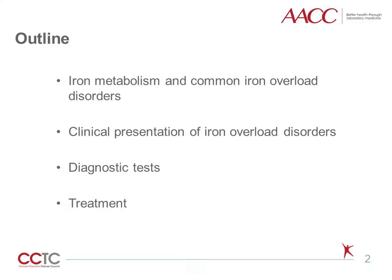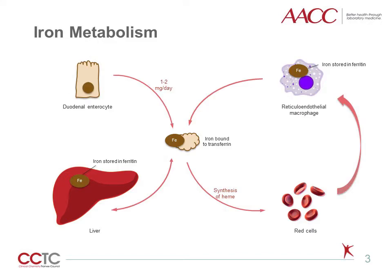And finally, we'll briefly discuss some common therapies of iron overload disorders, which include therapeutic phlebotomy and chelation. Each day, 1-2 mg of iron is absorbed by enterocytes of the small bowel. Absorbed iron is bound to transferrin in circulation and is primarily used for the synthesis of heme.